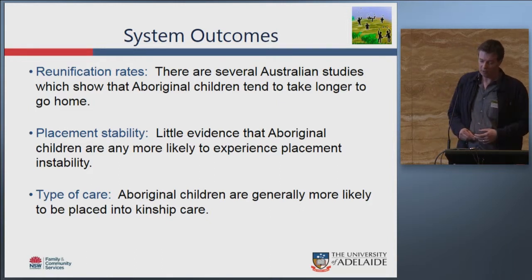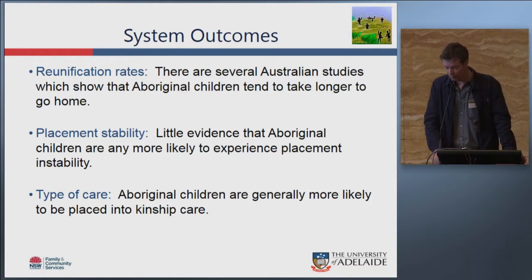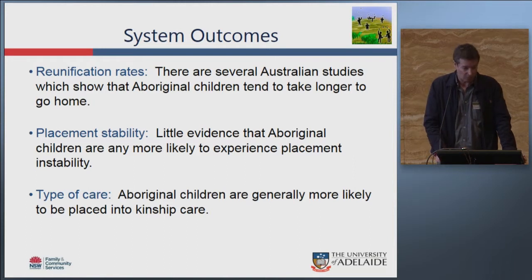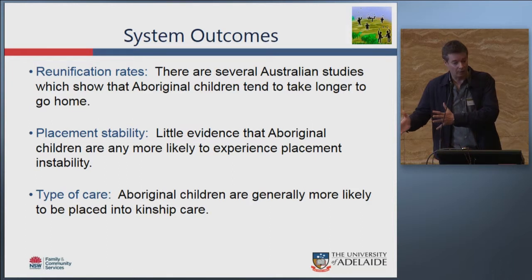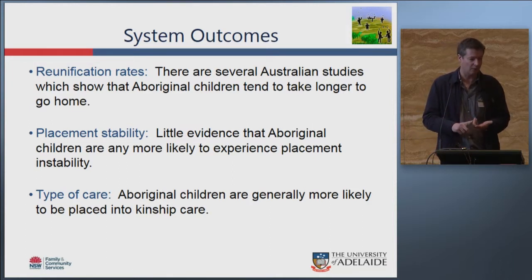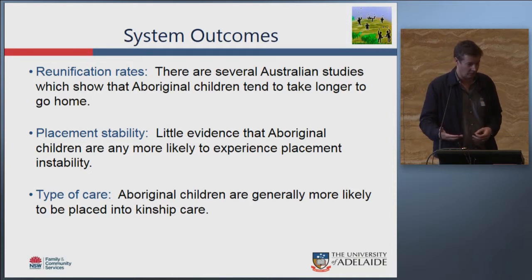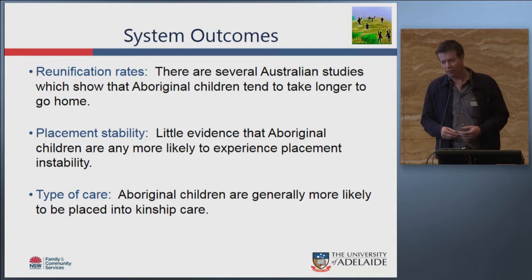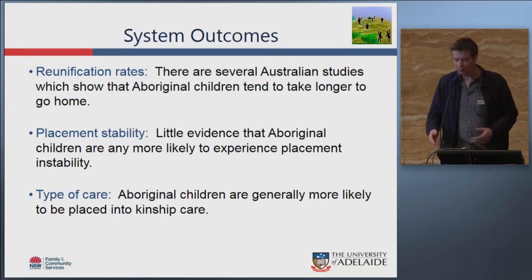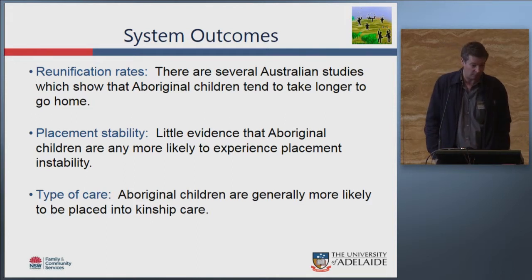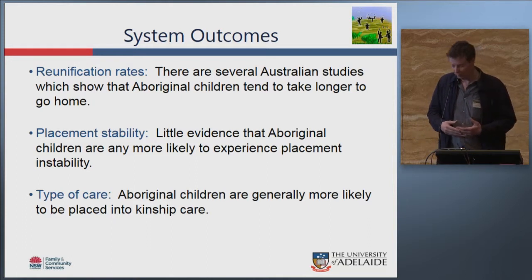On system outcomes, some work has been done on reunification patterns. Elizabeth Fernandez and I conducted a national study across multiple states using hazard models to look at factors predicting how quickly young people went home. We did Aboriginal comparisons for Tasmania, Victoria, South Australia, New South Wales and Queensland. Where we found differences, they almost always showed Aboriginal children staying in care longer — taking longer to be reunified — typically because they were more likely to be in kinship care, which is associated with a slower return home. There was no evidence of differences in placement stability for Aboriginal versus non-Aboriginal children.